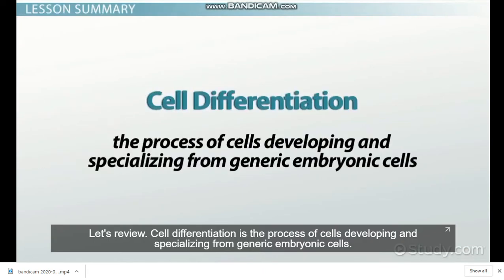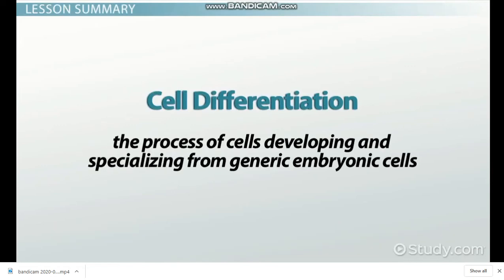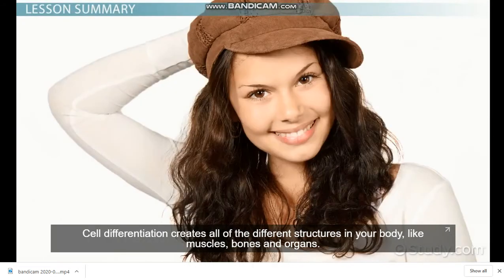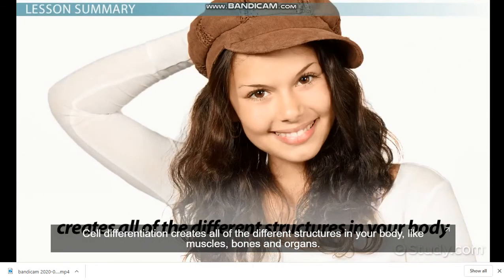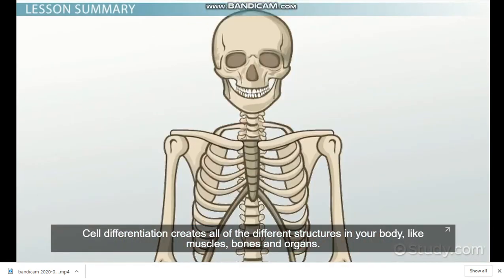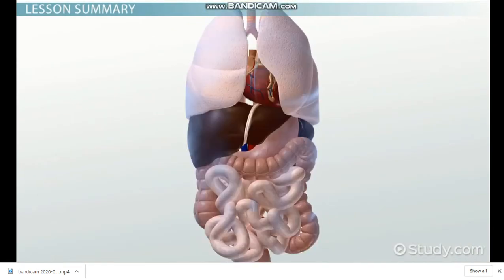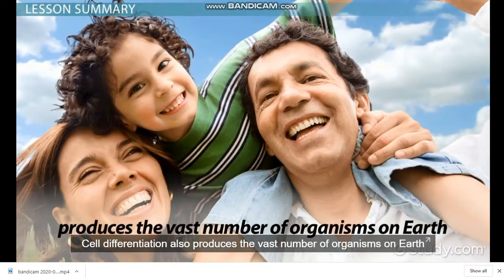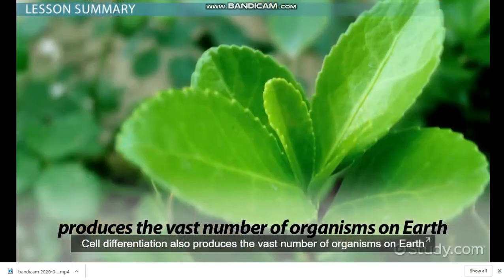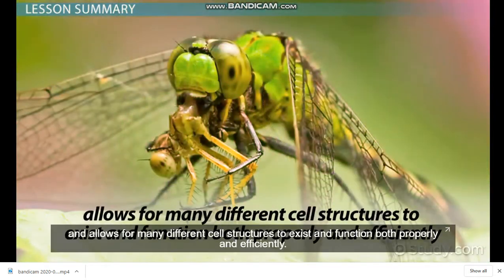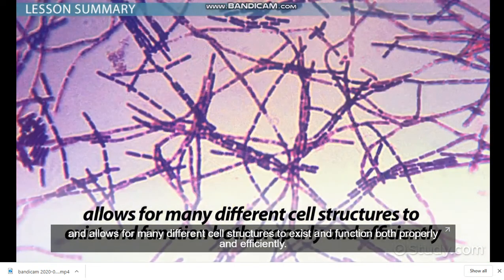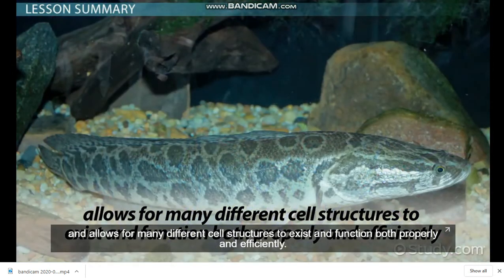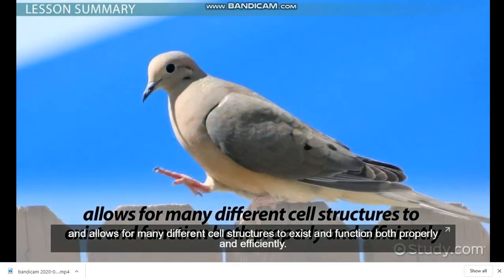Let's review. Cell differentiation is the process of cells developing and specializing from generic embryonic cells. It creates all of the different structures in your body, like muscles, bones, and organs. Cell differentiation also produces the vast number of organisms on Earth and allows for many different cell structures to exist and function both properly and efficiently.